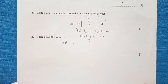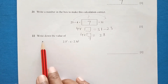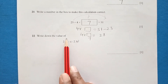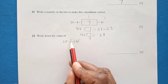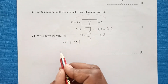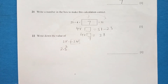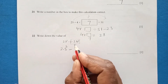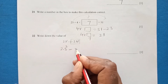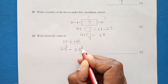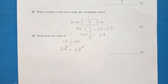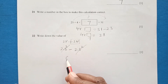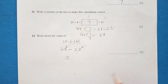Question 23: Write down the value of 2.3 squared minus (-2.3) squared. This is in brackets, so the square belongs to negative 2.3. When you square a negative number it becomes positive: (-2.3)² equals 2.3². So we have 2.3 squared minus 2.3 squared, which cancel out. The final answer is 0.